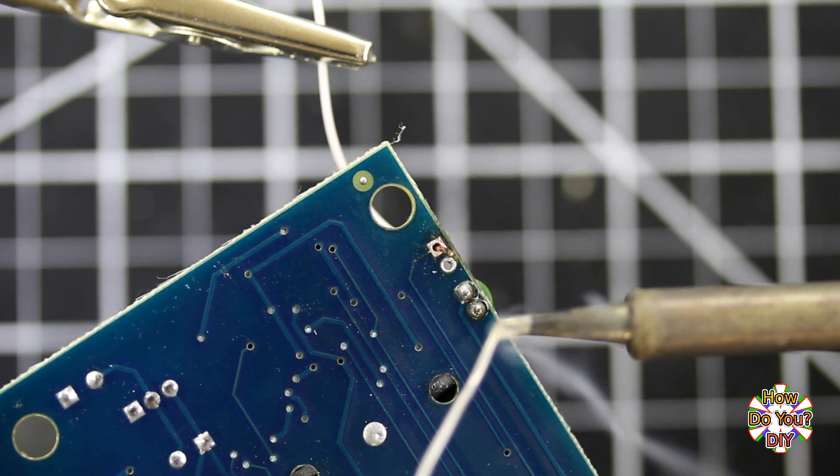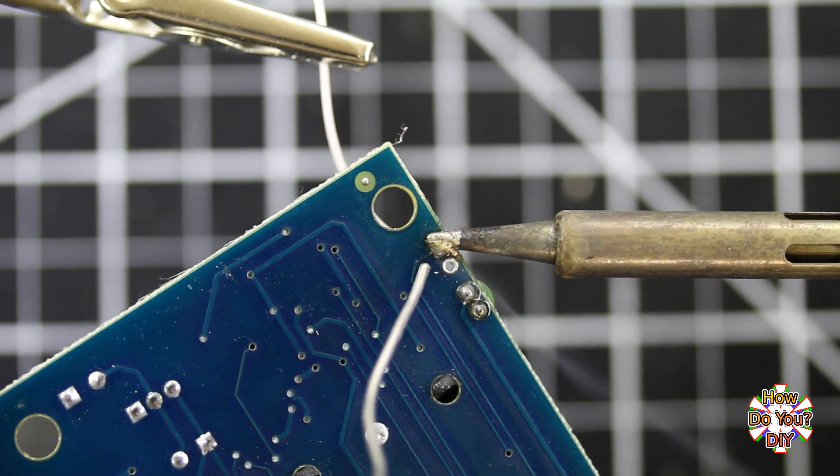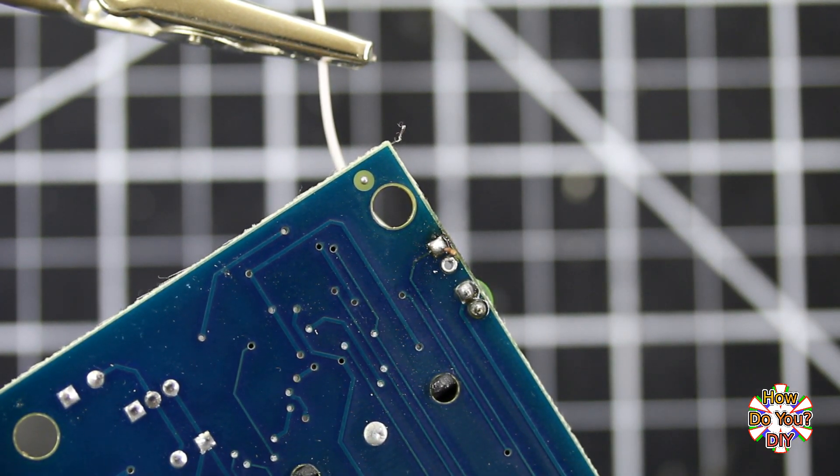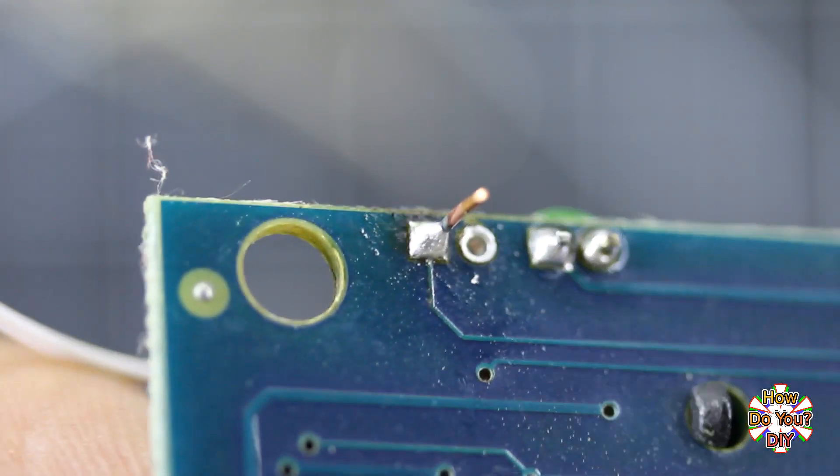Whenever you're soldering, the solder needs to make a good bond to the parts that you're soldering onto. The metal of the parts and the metal of the solder need to come into direct contact with each other in order to create a good bond.